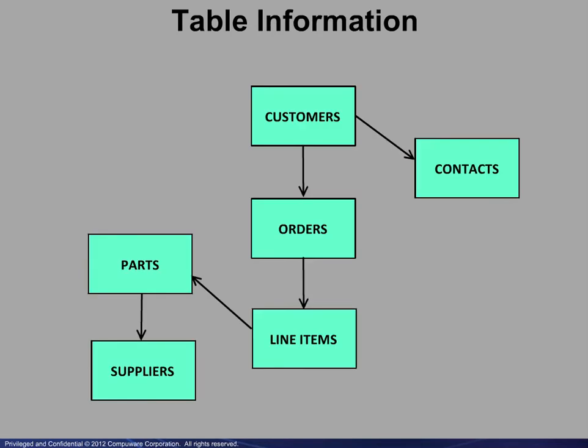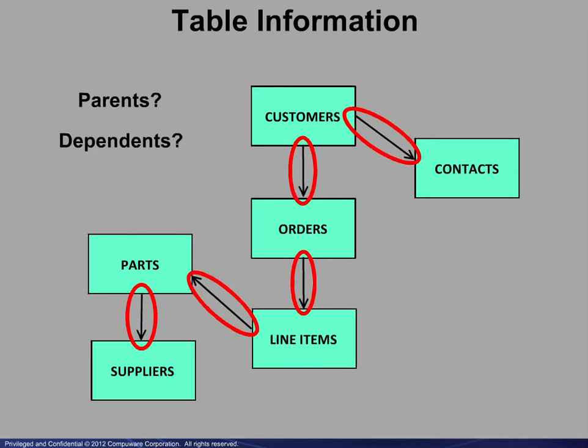We begin with a discussion on table information. Here is a typical diagram of the tables in a small order entry system. The relationships — that is, which tables are the parents and which tables are the dependents — are usually indicated by the connecting lines.